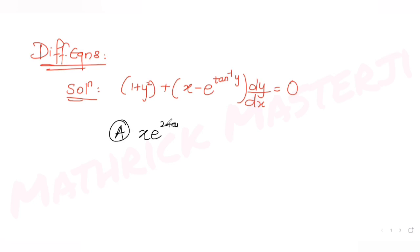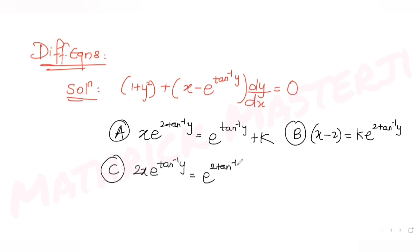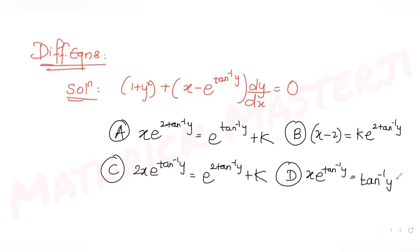The answer choices for the solution are: (A) x·e^(2tan⁻¹y) = e^(tan⁻¹y) + k, (B) x − 2 = k·e^(2tan⁻¹y), (C) 2x·e^(tan⁻¹y) = e^(2tan⁻¹y) + k, and (D) x·e^(tan⁻¹y) = tan⁻¹y + k. We need to find which is the correct answer.